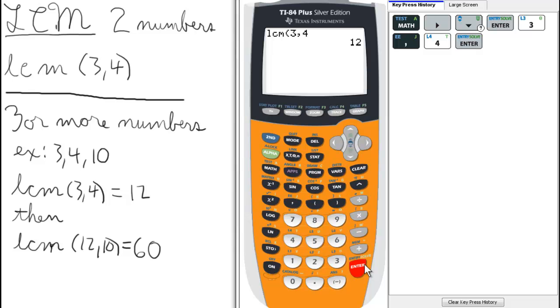Now if you wanted to do it for 3 or more numbers, all we do is repeat the process. So we go to math, number, and 8 for the LCM, and we select the last answer, in this case 12, comma, and then our third number, in this case let's say 10. So this will give us the LCM of 3, 4, and 10.